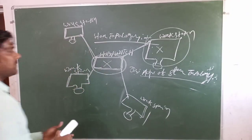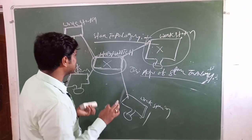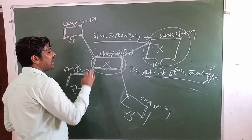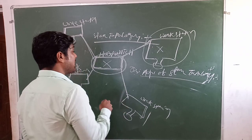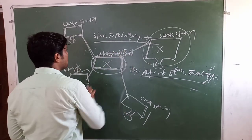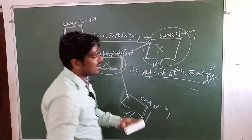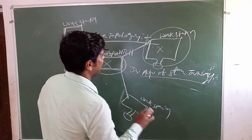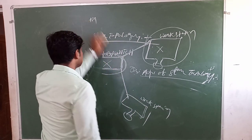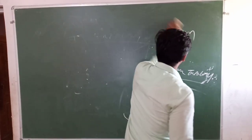In summary, star topology is a very popular topology which connects every device to the central hub and switch, allowing all workstations to operate simultaneously. These are the advantages and disadvantages of star topology. The second topology we will discuss is bus topology.